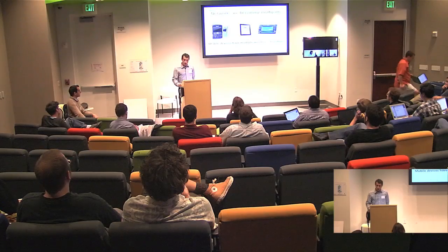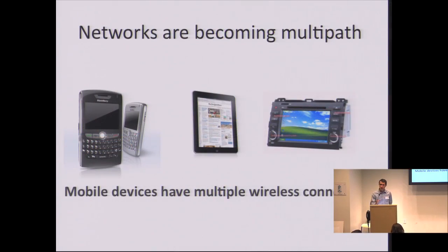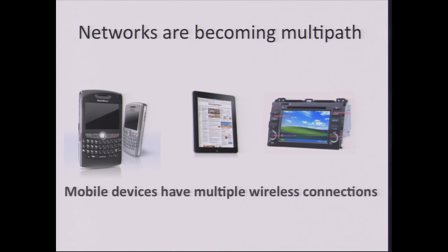I'll start off by giving a simple observation: networks are becoming multipath. We all have mobile devices — whether they are smartphones, tablets, or even cars with computers. These devices have multiple wireless connections, each with different properties: different coverage, different throughput, and even different energy consumption. 3G is generally more power intensive than Wi-Fi.